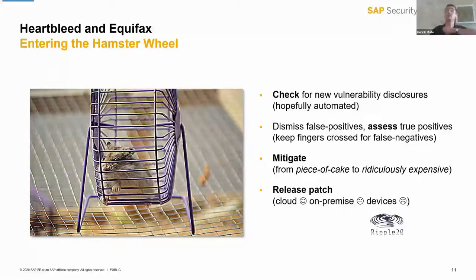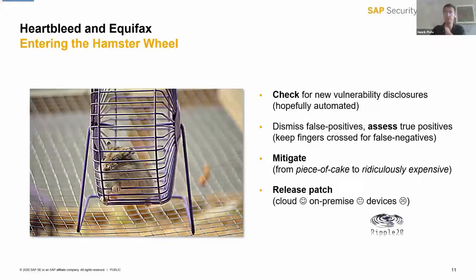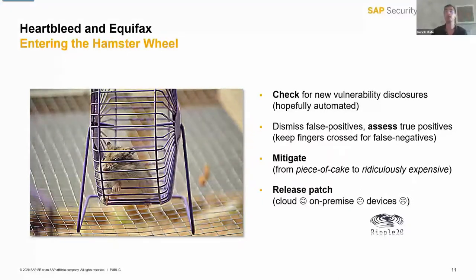The next part of the hamster wheel is mitigation, which can be very easy if your upstream projects respect SemVer, and very difficult if you have vulnerabilities in long-dead projects that you need to fix in your own fork. Then you release a patch — congratulations to all running software in the cloud, that's easy. But for those patching software running on devices, the Ripple 20 vulnerability exemplified the scale of the problem: a vulnerable TCP stack existed in hundreds of thousands of devices, many unknown, and for some you cannot even push a patch.